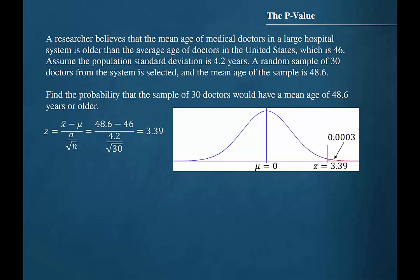The area under the standard normal distribution to the right of z equal to 3.39 is 0.0003. Using probability notation, we can write the probability that z would equal or exceed 3.39 would be 0.0003.